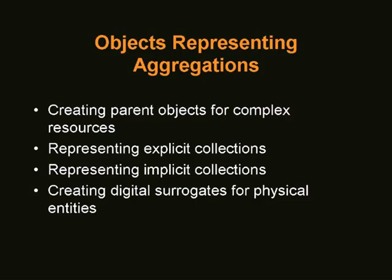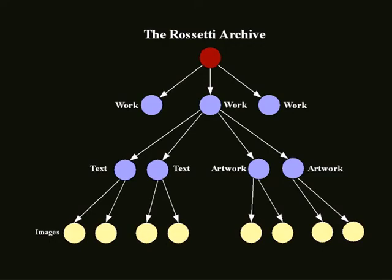Objects representing aggregations, explicit and implicit collections — I've covered this already. So let me move on to some concrete examples. This first example is a project I personally worked on starting in 1992, and it's really why I got into Fedora — the Rossetti Archive.